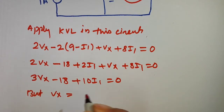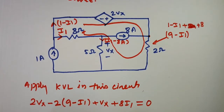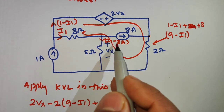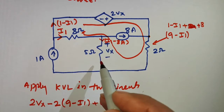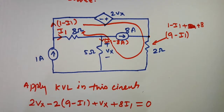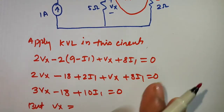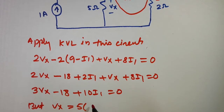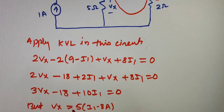Simplifying: 3Vx plus 10I1 minus 18 equals zero. From this, Vx is equal to 5I1 minus 8. This will be our expression for Vx.